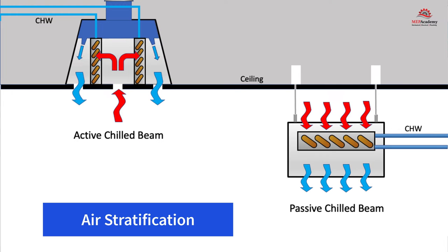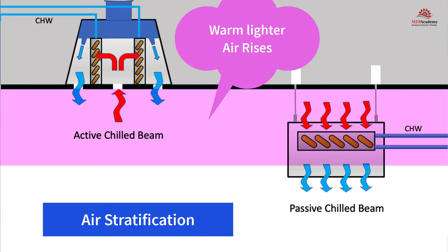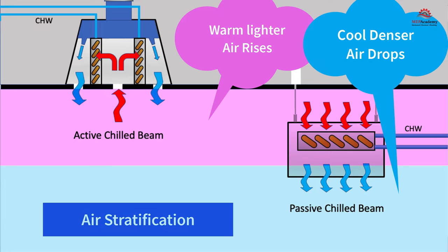Air stratification is when you have different levels of air temperatures. With chilled beams, this involves the natural stratification of warm air versus cold air — warm air will rise, while cold air, being denser, will drop to the bottom.